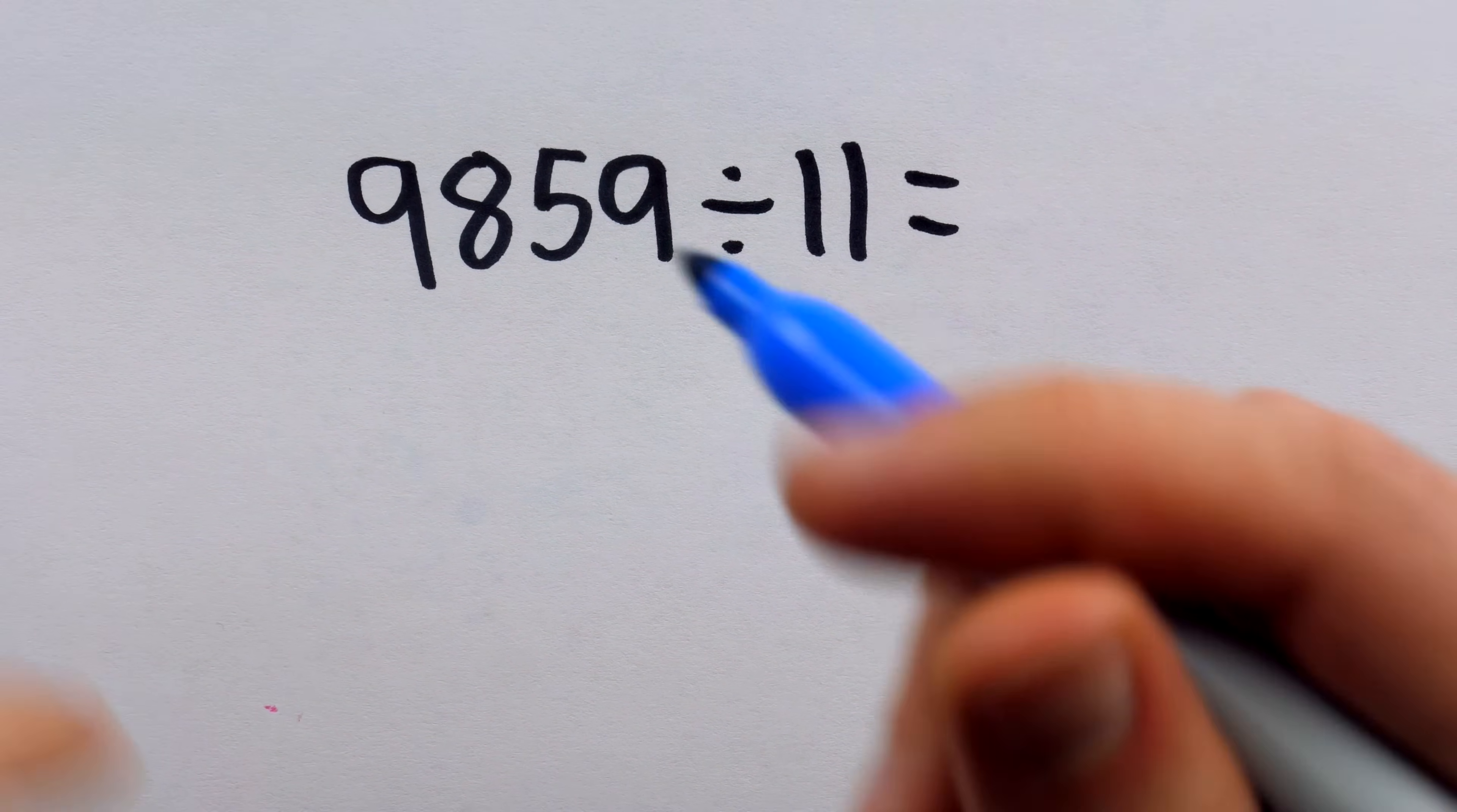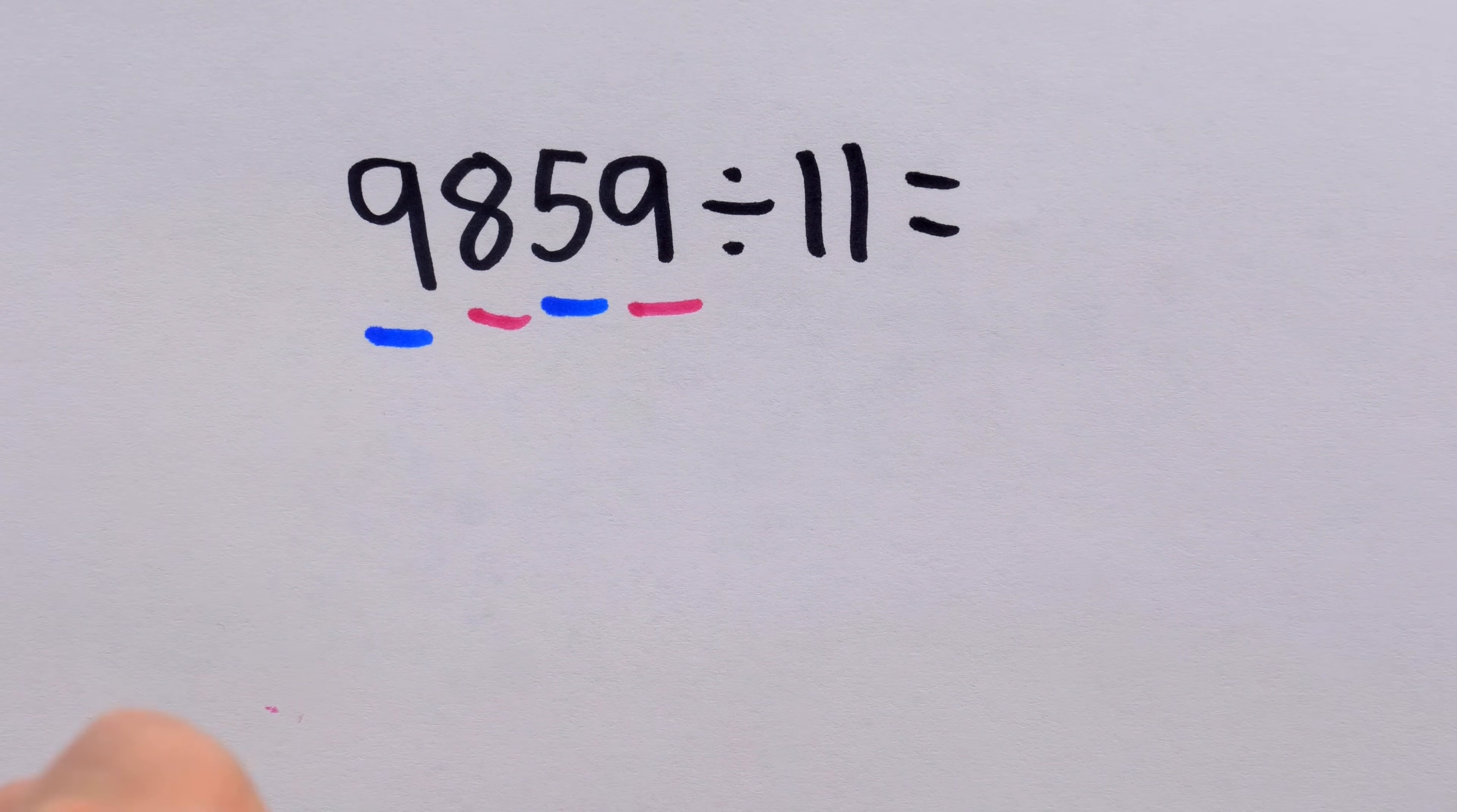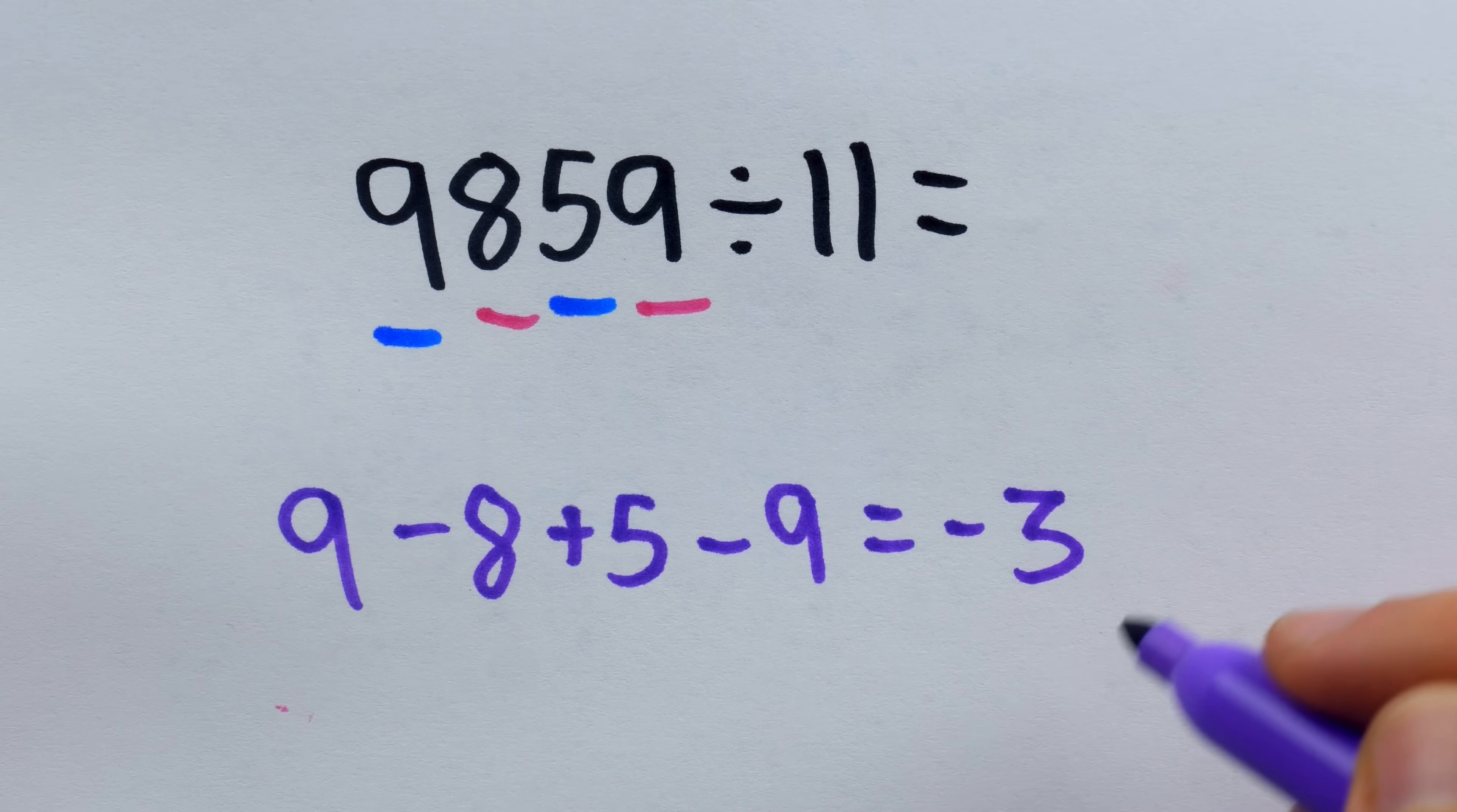With the divisibility test, what we need to do is 9 minus 8 plus 5 minus 9 and see if the result is a multiple of 11 or not. In this case, that gives us 9 minus 8 plus 5 minus 9. And this is equal to negative 3, which is certainly not a multiple of 11.